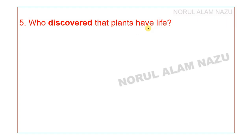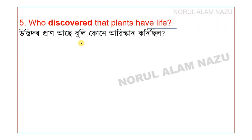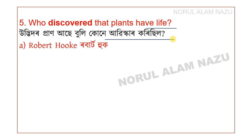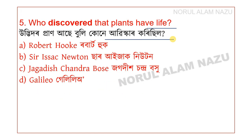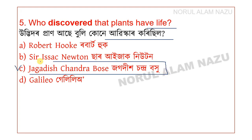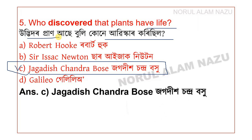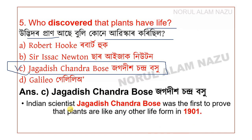Question 5: Who discovered that plants have life? The answer is option C — Jagadish Chandra Bose, an Indian scientist who was the first to prove that plants are like any other life form, in 1901.